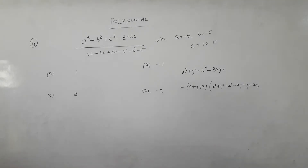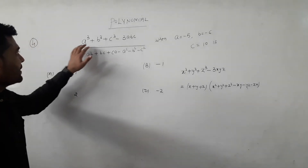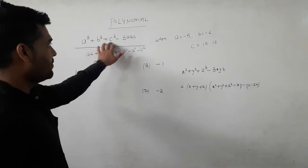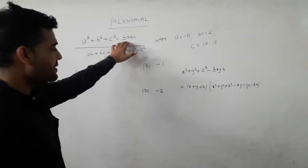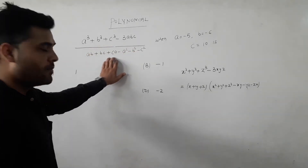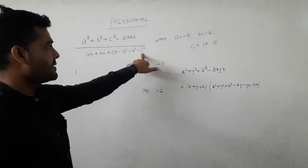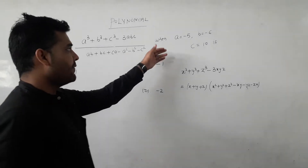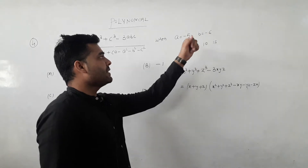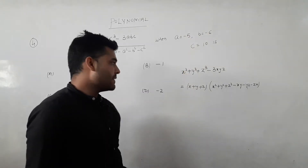Next question: given the statement a³ plus b³ plus c³ minus 3abc, divided by ab plus bc plus ca minus a² minus b² minus c². There is a equal to minus 5, b equal to minus 6, and c equal to 10.